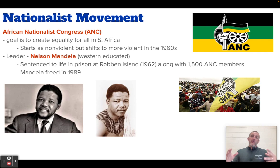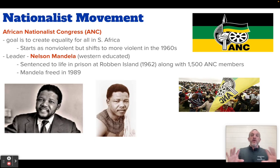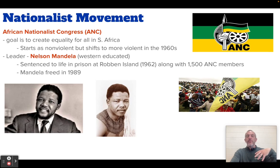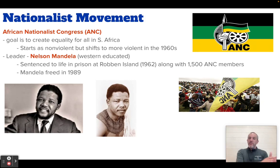As a result of becoming more violent, a lot of their members start getting arrested. Their main leader — the figurehead and face of this movement — is Nelson Mandela. He is going to be arrested and sentenced to life in prison at a place called Robben Island in 1962, along with 1,500 other members of the ANC, all put on this little island on the southern tip of South Africa.